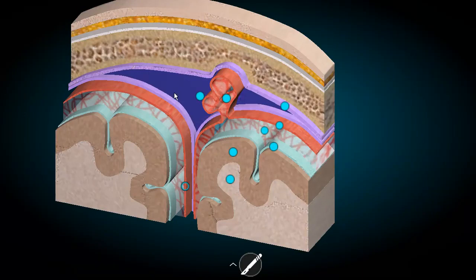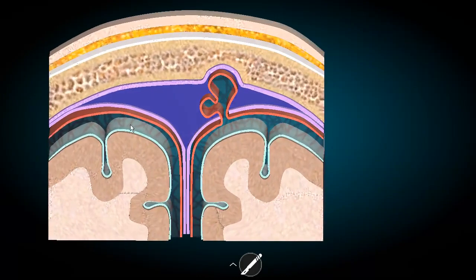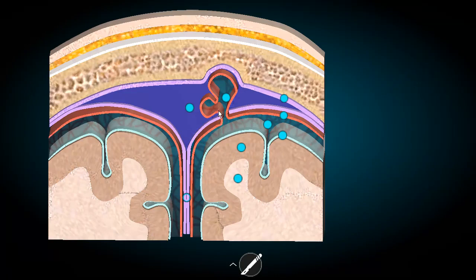Here we have the two layers of dura mater, the subdural space, and the epidural space above. Right over here we have the subarachnoid space, and you can see these spider-like extensions in this region — this is the area filled with CSF. The subarachnoid actually makes protrusions into the superior sagittal sinus. The CSF will then pass through these arachnoid granulations and go into the bloodstream. This is how the CSF and blood circulations communicate.